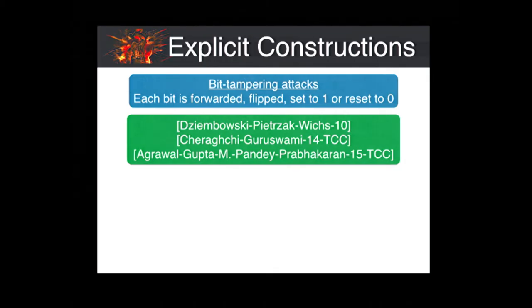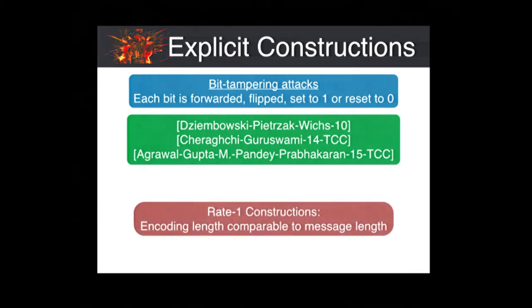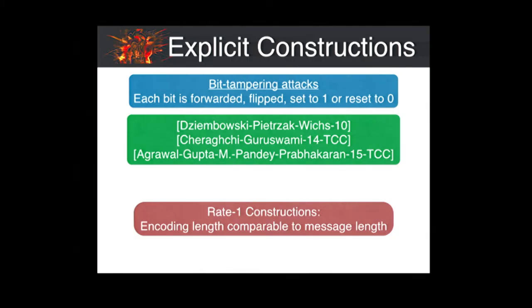In this final work, we were able to provide a rate amplification compiler which takes a low-rate non-malleable code and amplifies its rate all the way to one. So now we know of rate-one constructions — that is, the encoding is roughly the same size as the message length itself — and they exhibit this fascinating property of non-malleability.